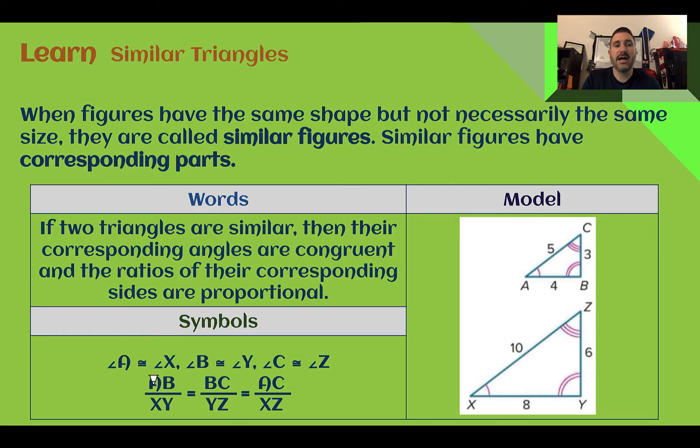If we look at our symbols here, we can see that side AB is proportional, it's a ratio with XY. And if we look at the model over here, we can see that AB and XY are the same positioning on the triangles, and XY happens to be twice as large as AB. We can look at the other sides, too, and see BC is related to YZ. So here's BC, here's YZ, and again, it's just doubled. And then AC with XZ, same position, and it's doubled.